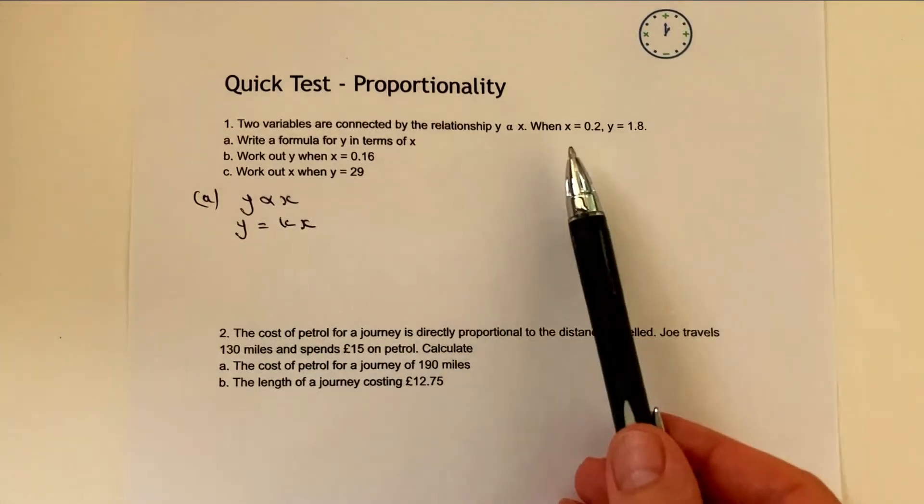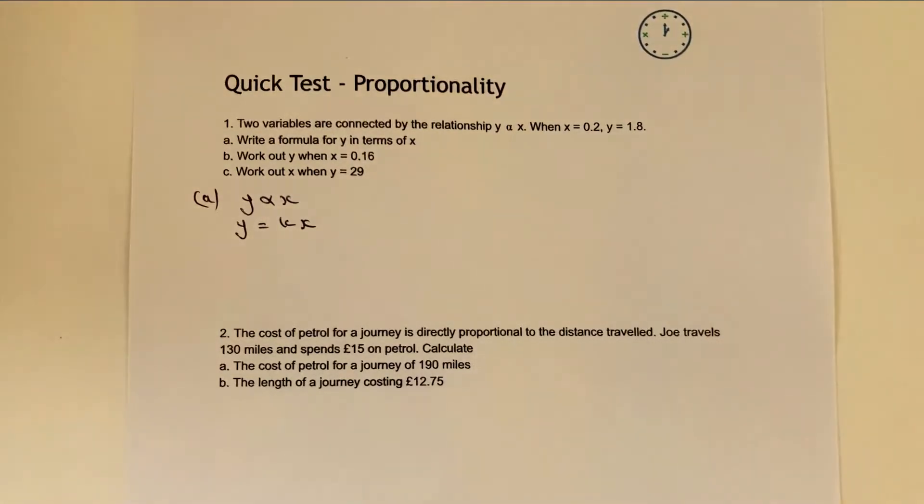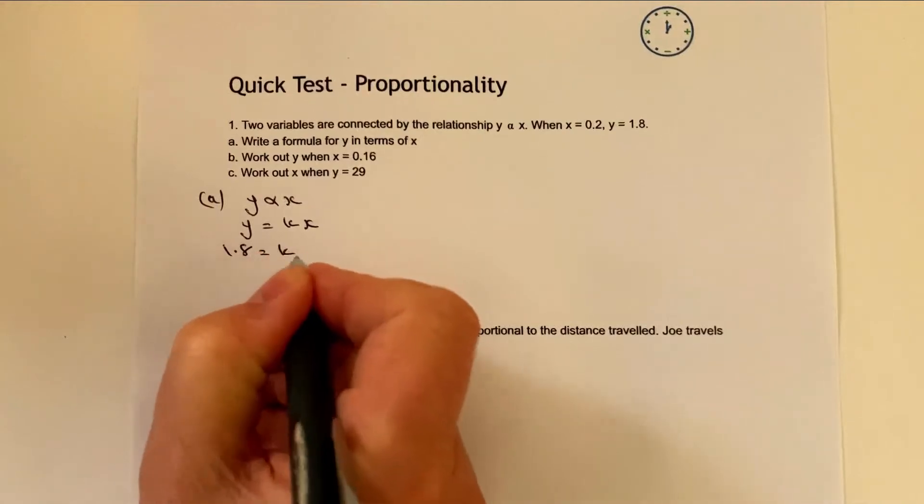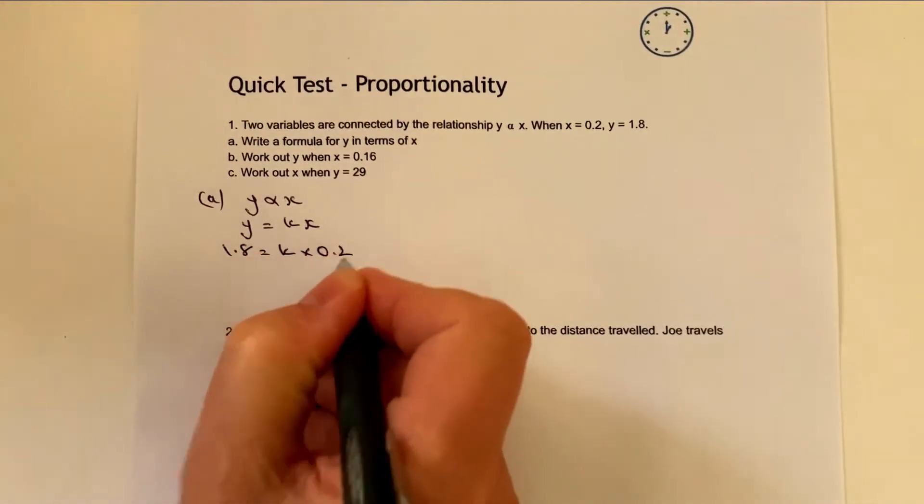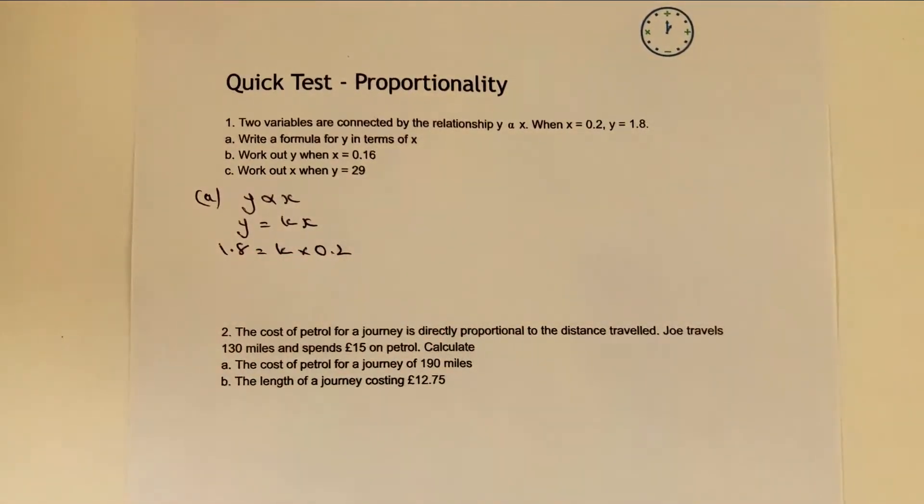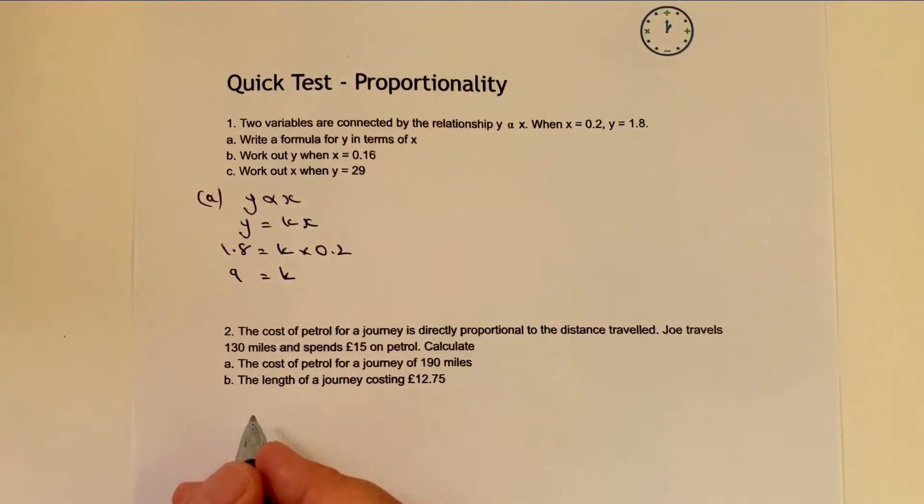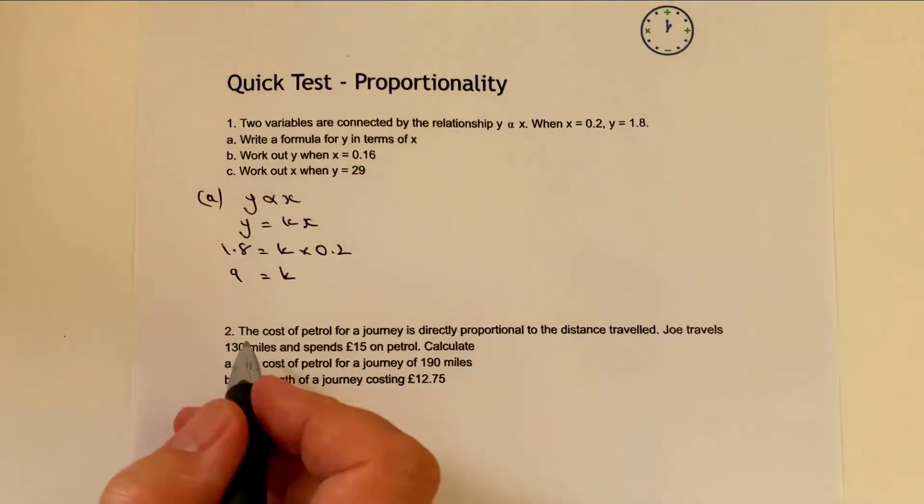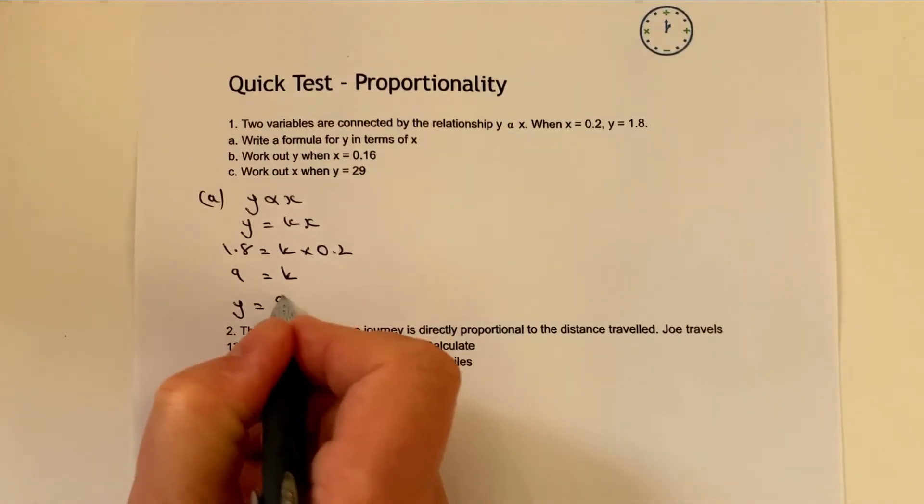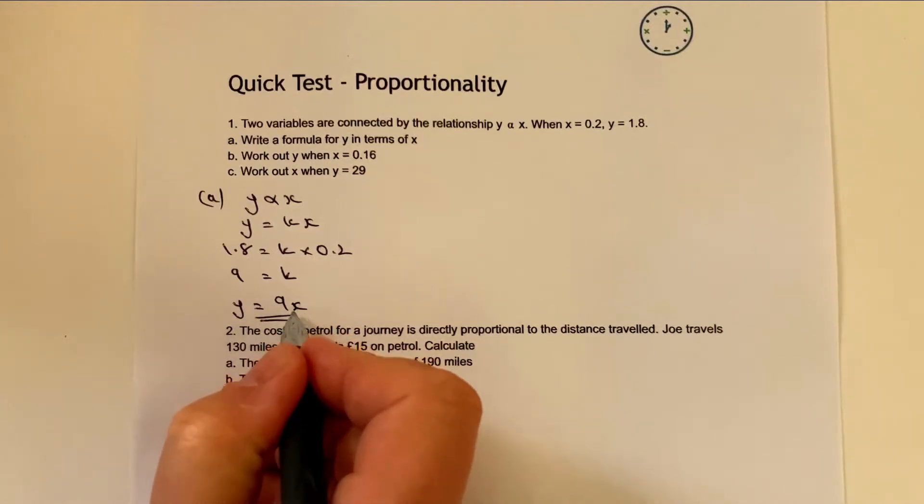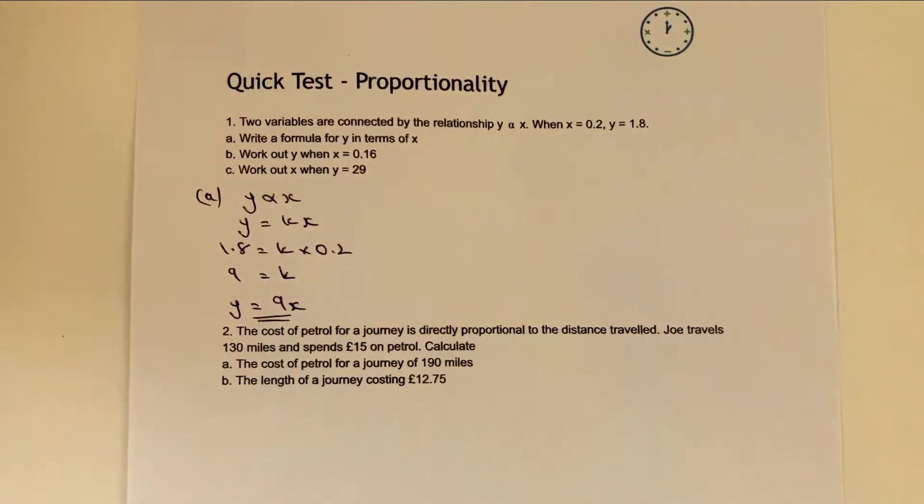We're told that when x equals 0.2, y equals 1.8. So we can write that as 1.8 equals k times 0.2. And then it's just a case of finding the value of k by dividing both sides by 0.2. So we're going to get k equals 9. Therefore we can now write the formula in answer to the first question as y equals 9x.